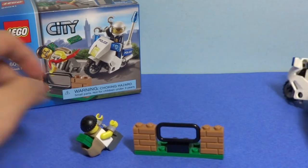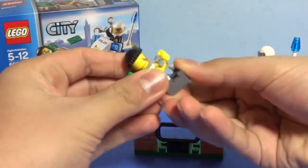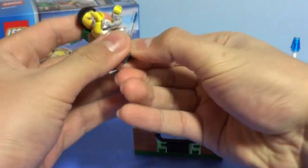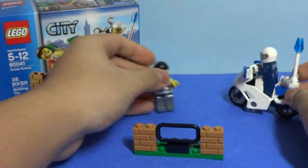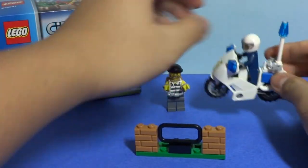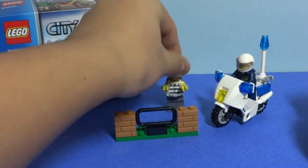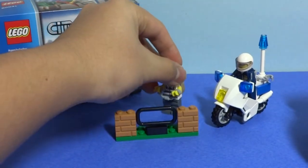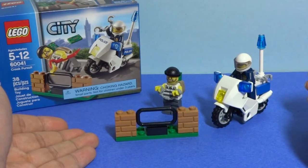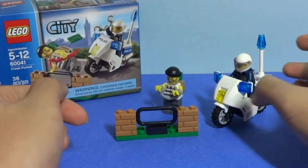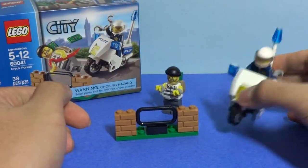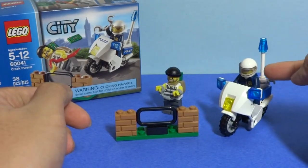So that was the Crook Pursuit, Lego City set, set number 60041, with the money, the nice thing to jump over even though you could comically go around, the poopy motorcycle, and the police officer.